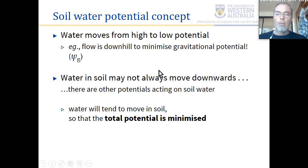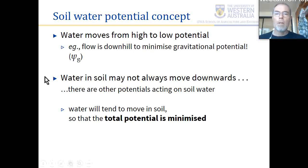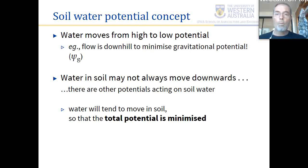The most simple example of water moving from high to low potential is water flowing downhill — from high gravitational potential to a lower reference point such as sea level. However, water in soil doesn't always move downwards; it may move upwards or sideways because there are other potentials acting on it. Water in soil will move to minimize its total potential, not just gravitational potential.